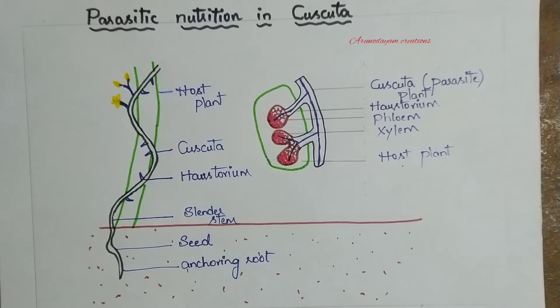We already have covered two types of nutrition in previous videos: autotrophic and heterotrophic nutrition. In autotrophic nutrition, organisms can prepare their own food materials — plants, for example. We have photosynthesis, its requirements, and end products covered in previous videos.